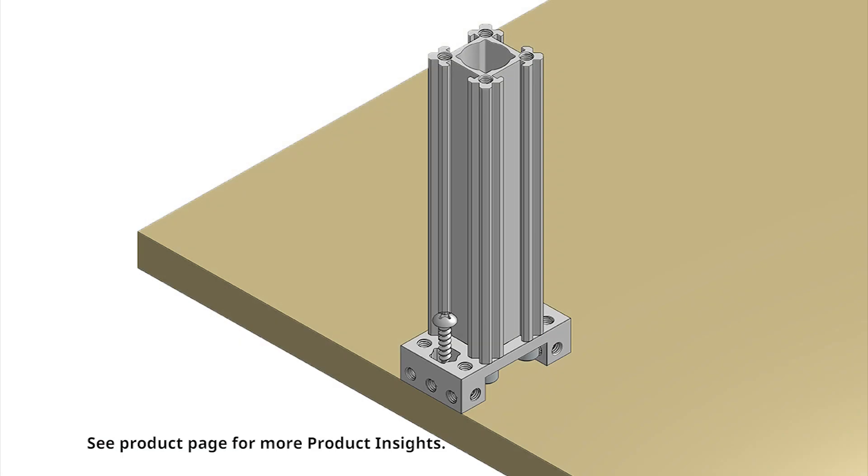But it also acts as a surface mount adapter. So if I wanted to mount a GoRail going up from this table, I have some through holes through which I can put some wood screws to hold this down to the table.